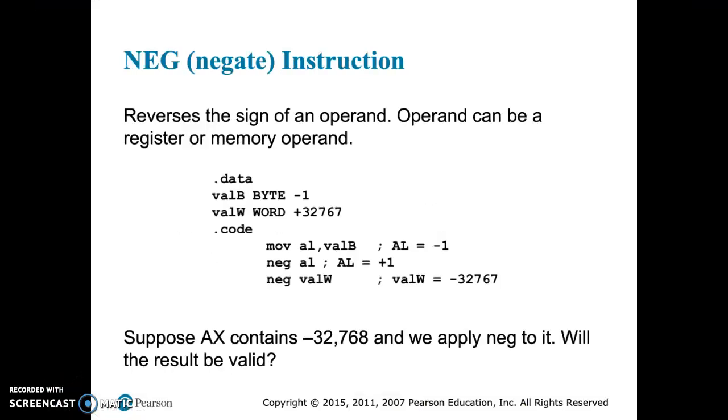Next we have the negate instruction. If you recall, this is very similar to the twos complement concept, but the negate essentially reverses the sign of a number by converting the number to the twos complement. You can think of it as performing the operation of 0 minus the number.